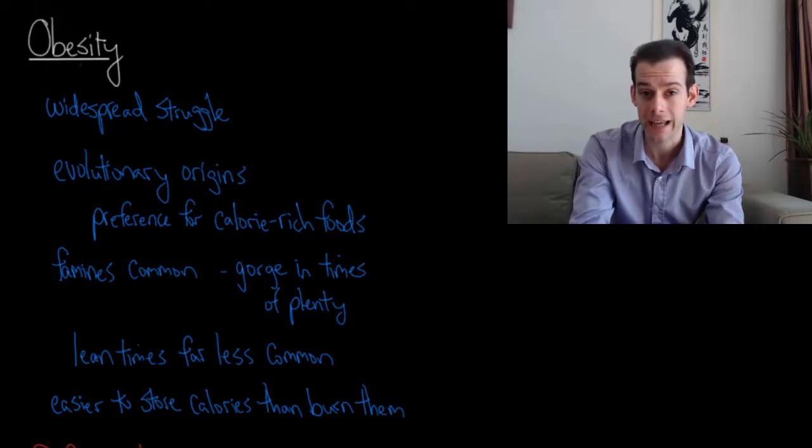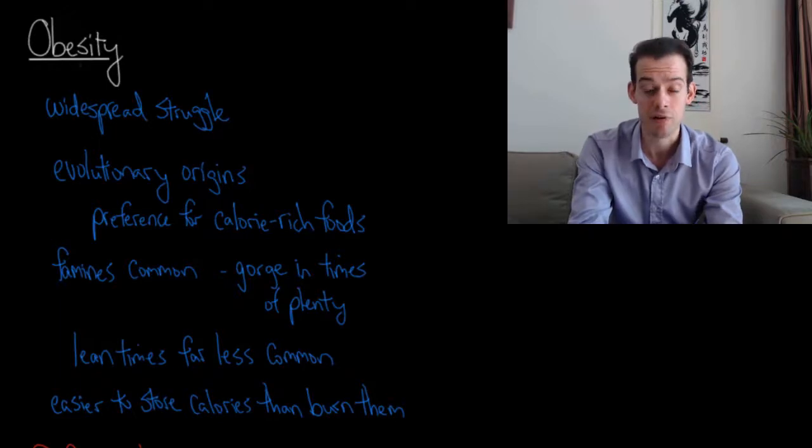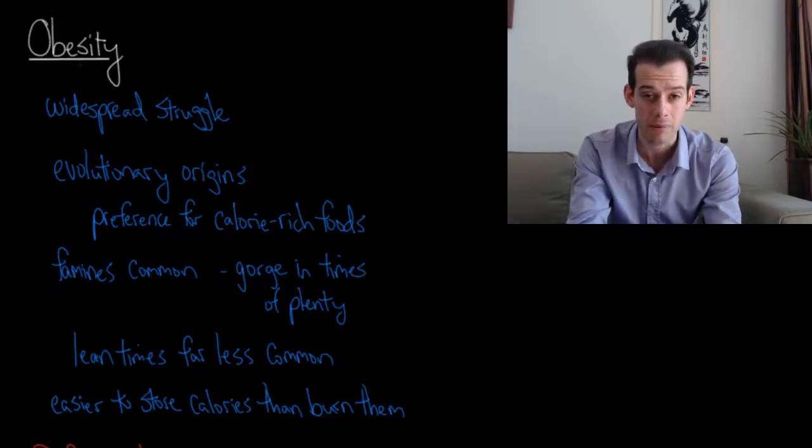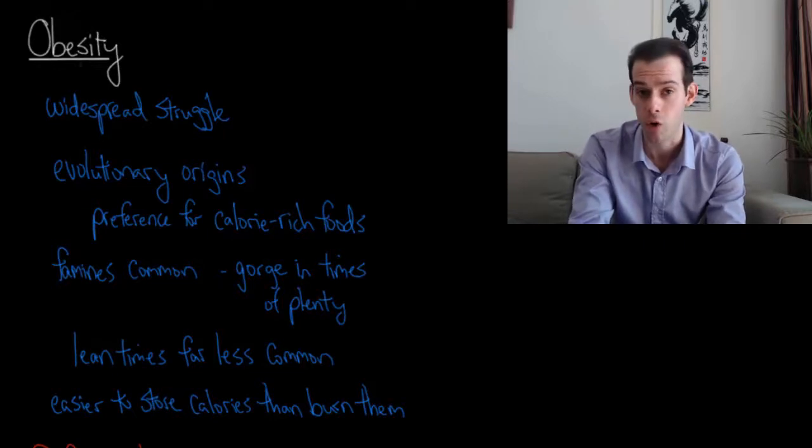Obesity is widely acknowledged as a problem of modern societies. It's been estimated that as much as 30% of the United States might be considered obese. One way we can think about this common problem in modern society is to consider the evolutionary origins for something like obesity.